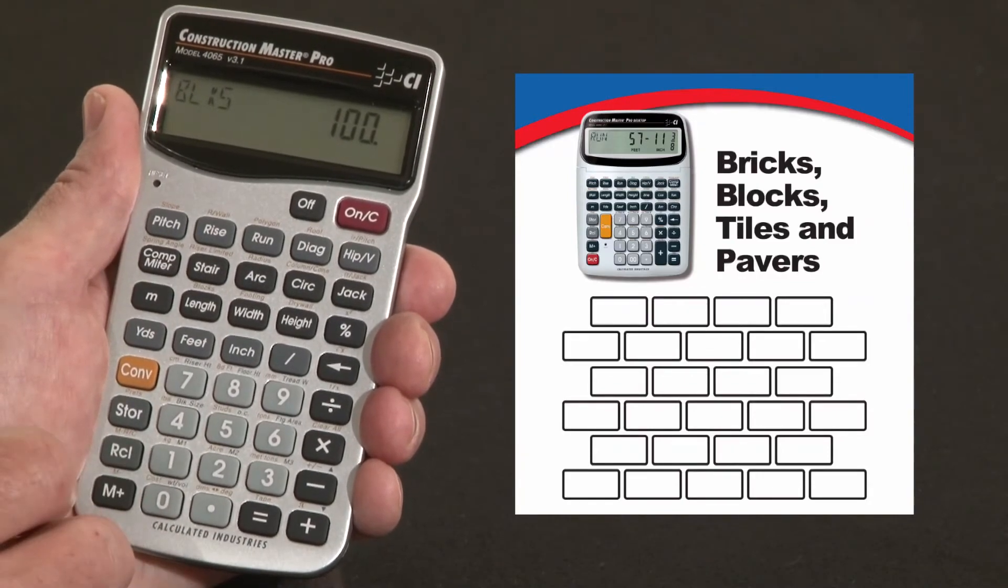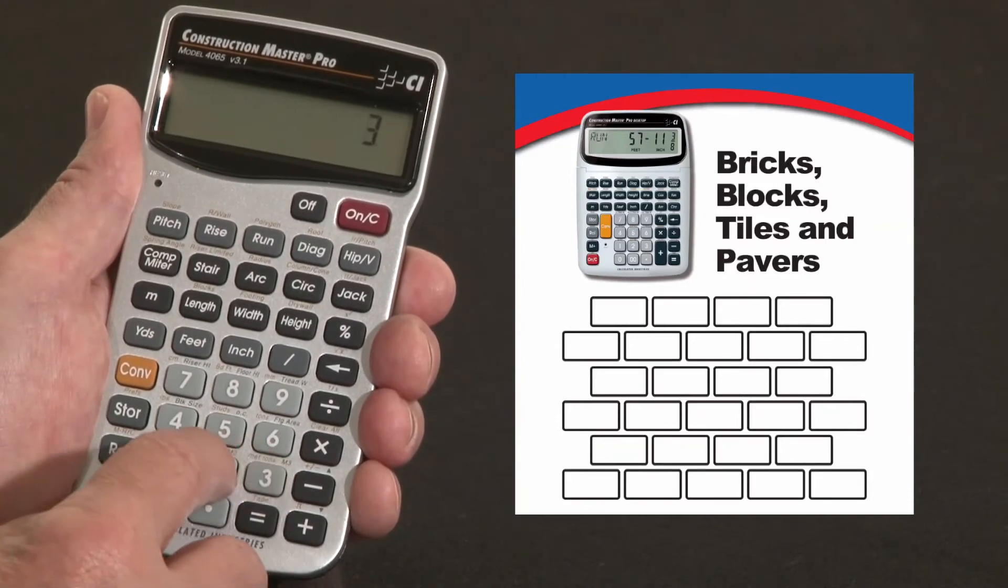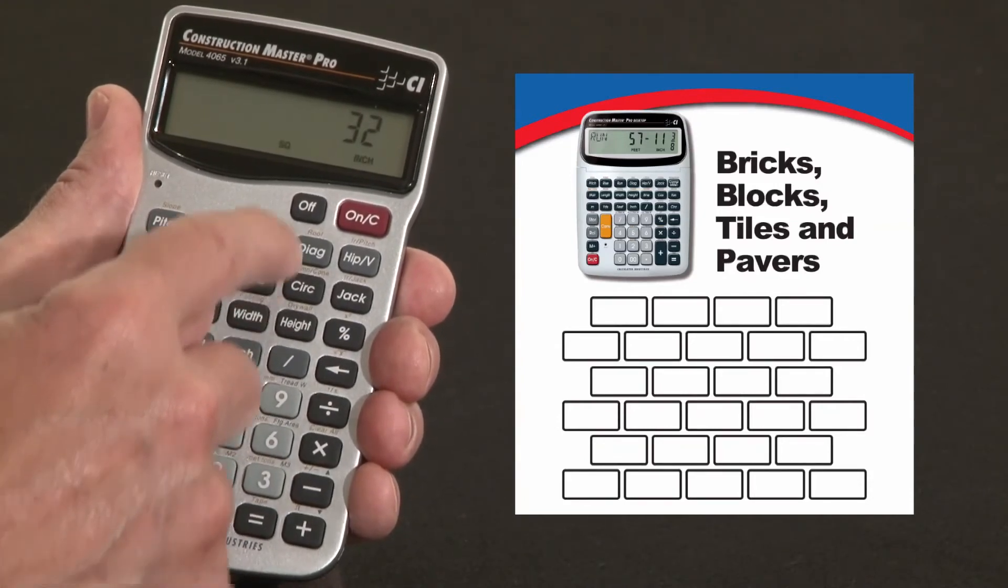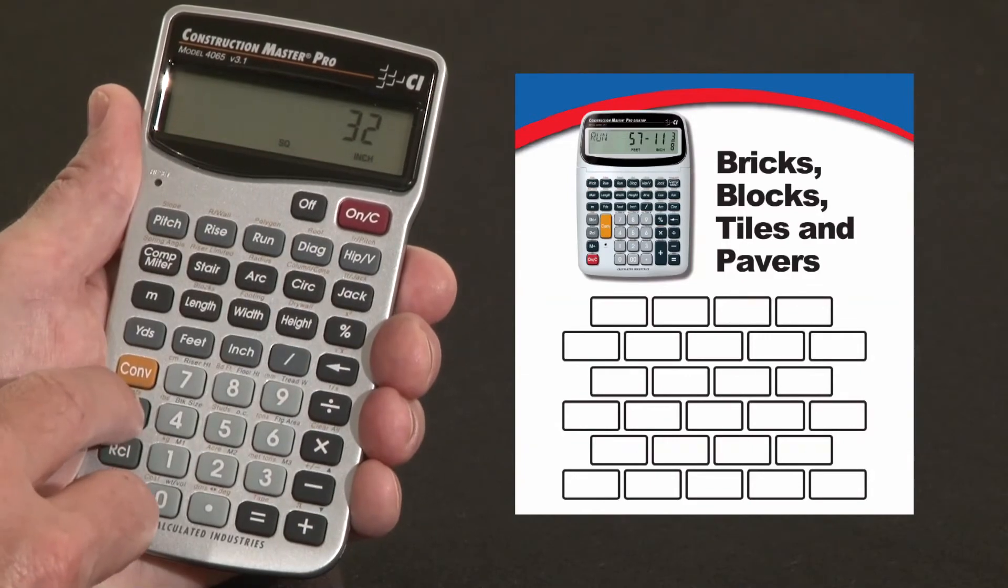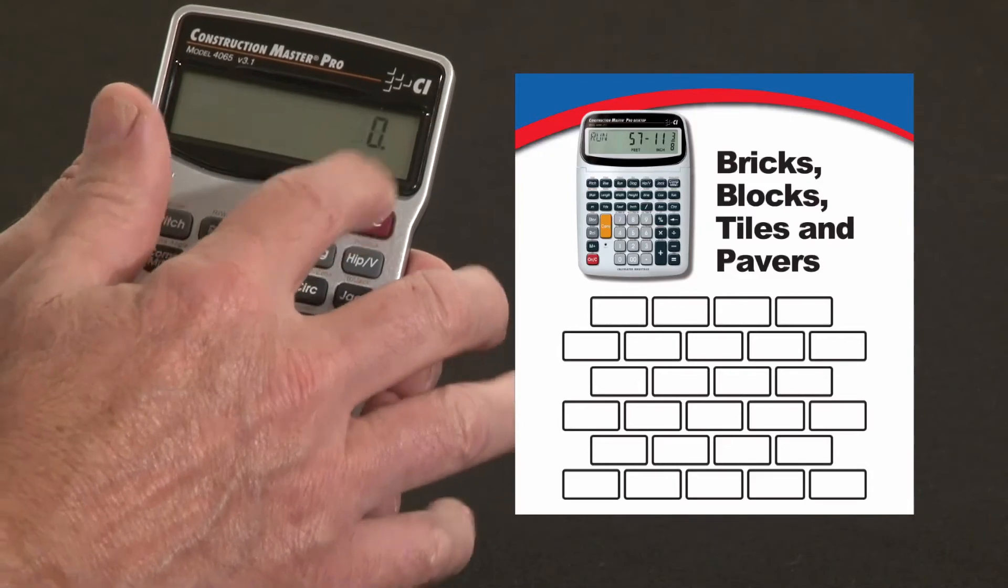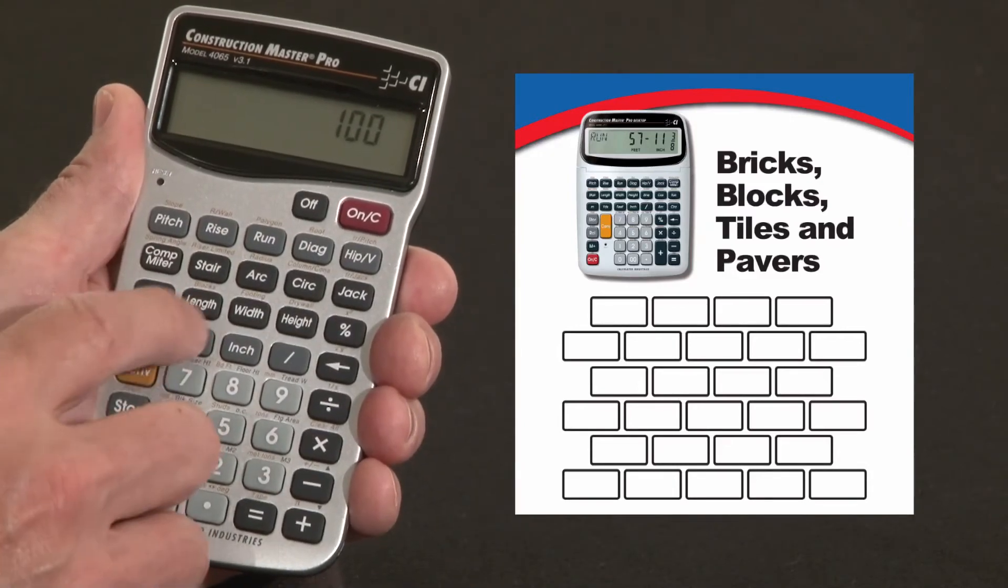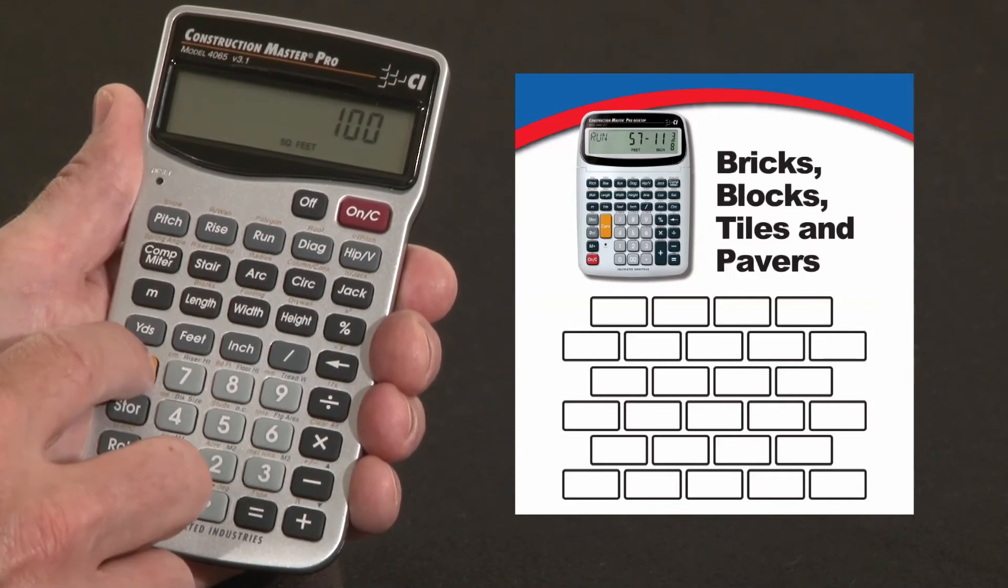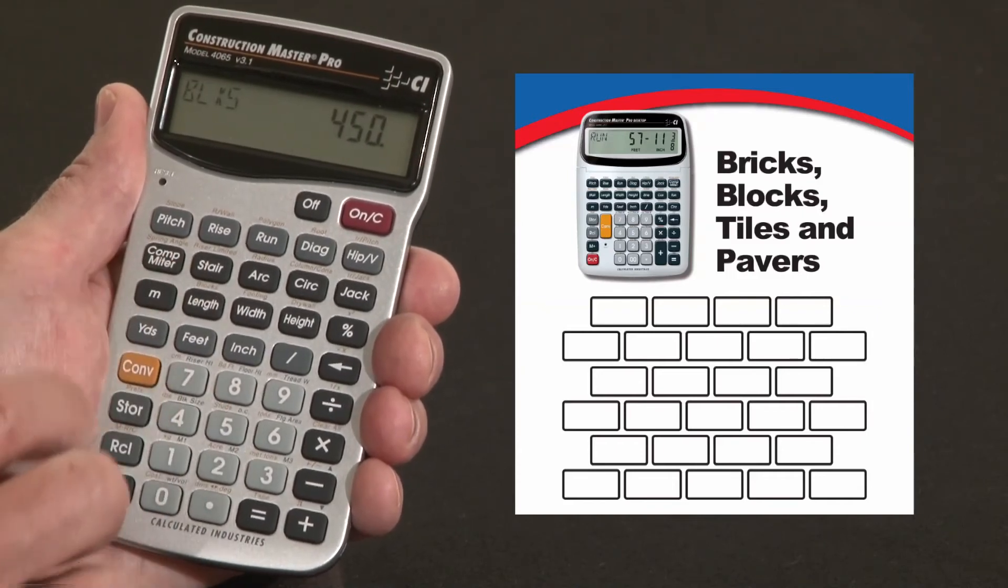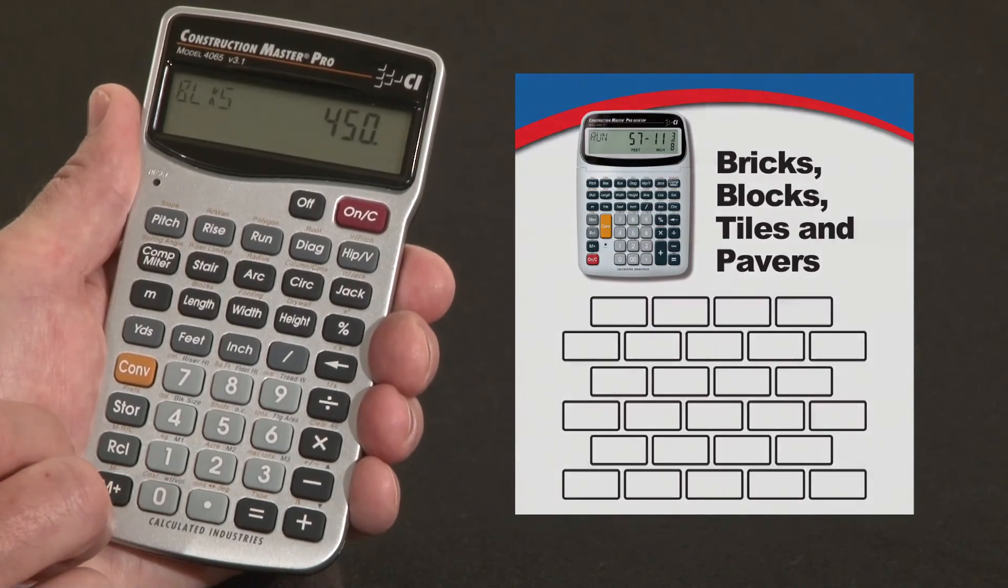If you've got pavers, for instance, maybe you have 4 by 8 inch pavers—you know that's 32 square inches, so you can just enter that directly: 32 square inches. Let's store that as our block area. Now that's stored, that's a paver size. And again, if this is a 100 square foot patio, 100 feet, convert to blocks—you're going to need about 450 of those 4 by 8 inch pavers to cover that patio.